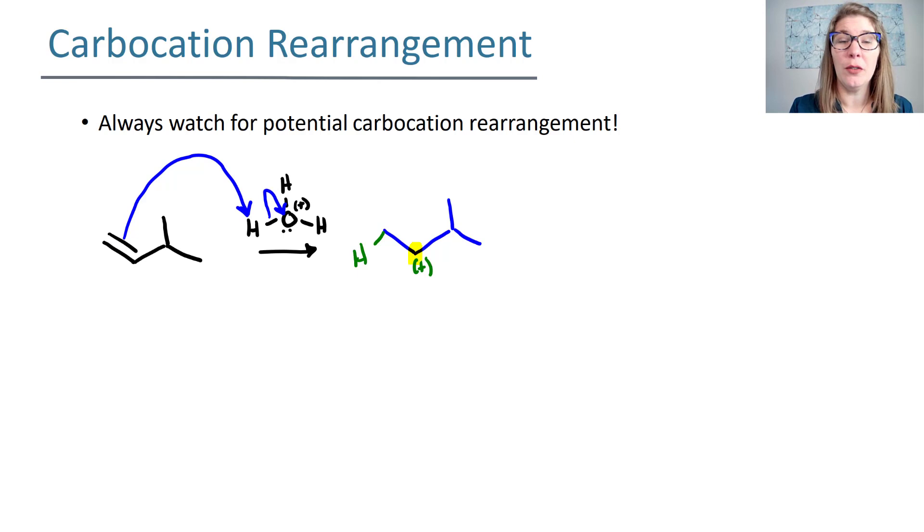If my positive charge is able to move to one of those beta positions, does it make the carbocation more stable? And the answer is yes. This hydrogen here can shift over to that middle position. And when that occurs, now you've left a hole where that hydrogen was. So my hole is now here.